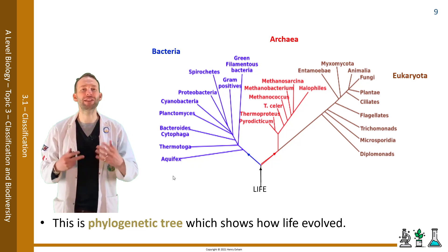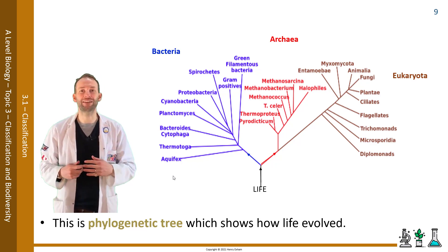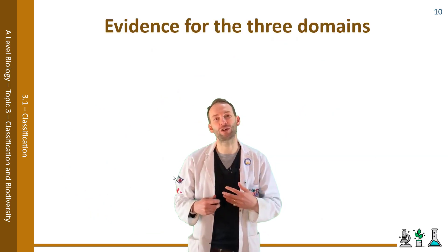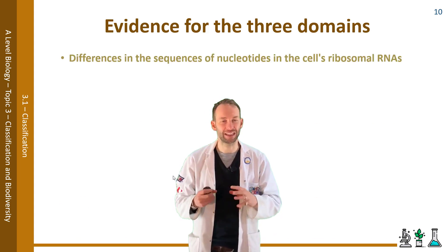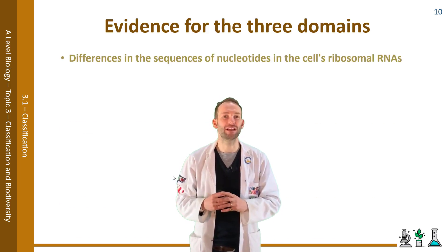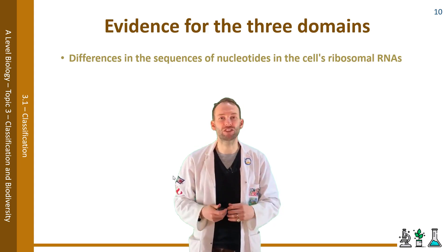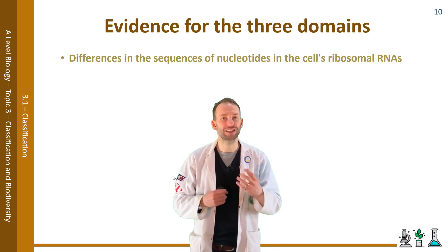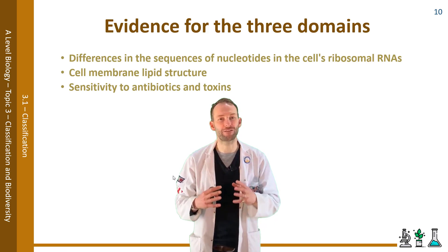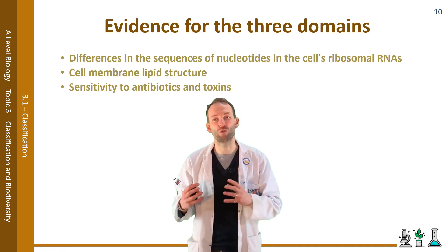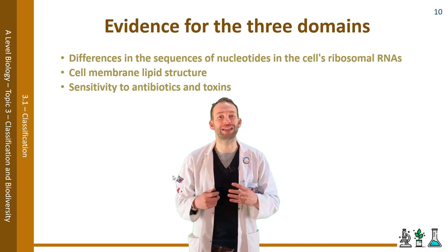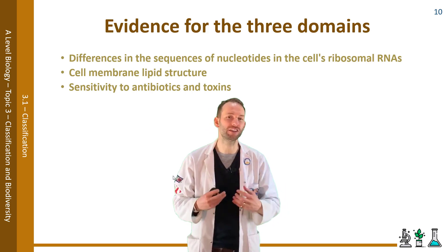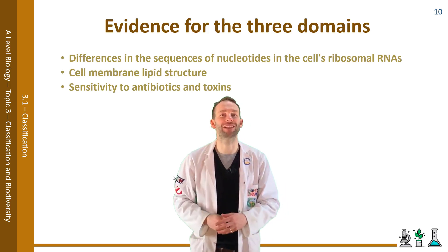The evidence for these three domains comes from differences in the sequences of nucleotides in the cells' ribosomal RNAs — clear differences in those sequences. The cell membrane lipid structure is also different. The sensitivity to antibiotics and toxins is different. This was enough for the scientific community to accept that there are definitely two distinct groups of prokaryotes and one of eukaryotes, and therefore there should be these three domains. Although there is still plenty of debate about how initial life on Earth started and how these three initial cell types came into existence.